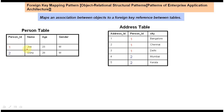Joe belongs to three places — Bangalore, Chennai, and Delhi — so we put person ID one three times in the address table. Goni belongs to Mumbai and Kerala, so in the address table we put person ID two twice. In this way we can identify Joe's person information and Goni's person information. This is an example of a foreign key relationship.